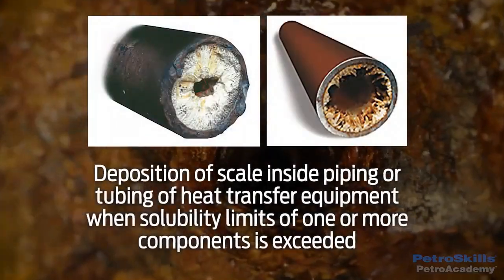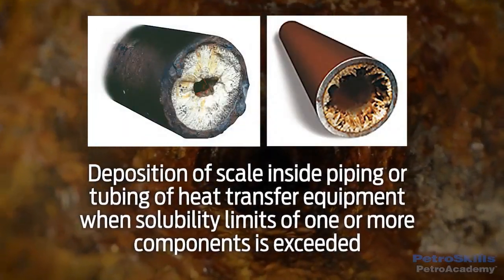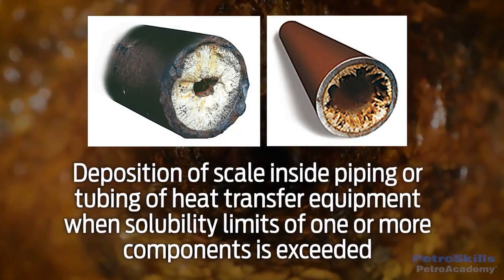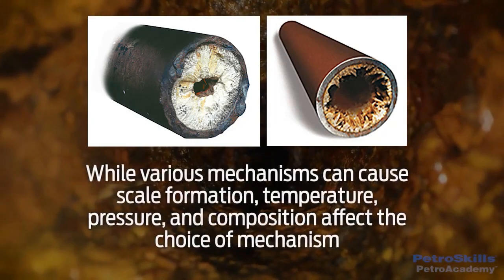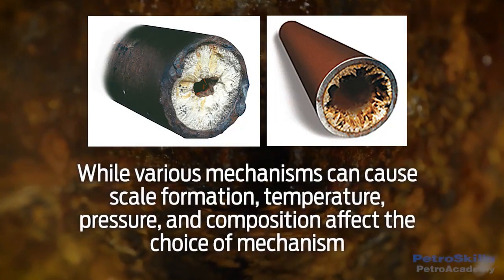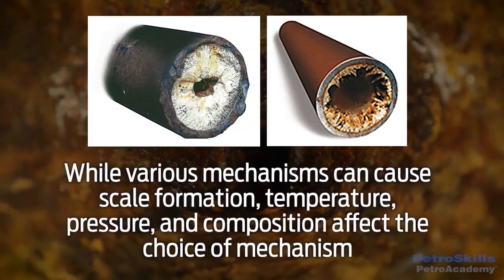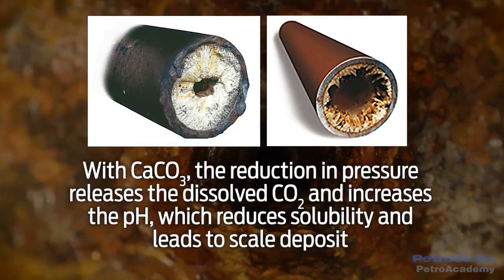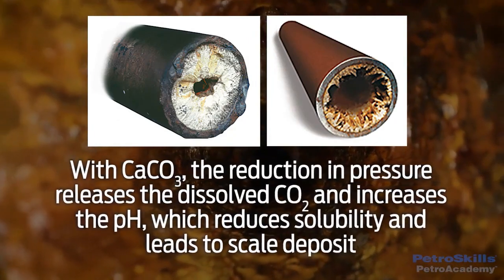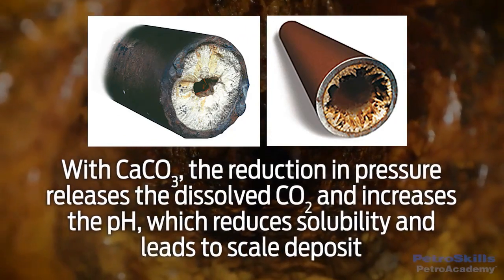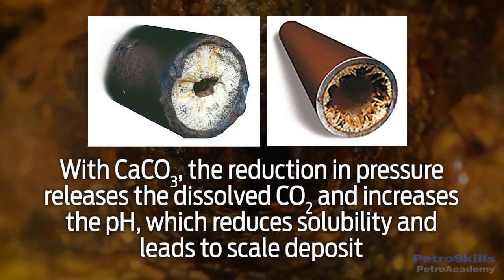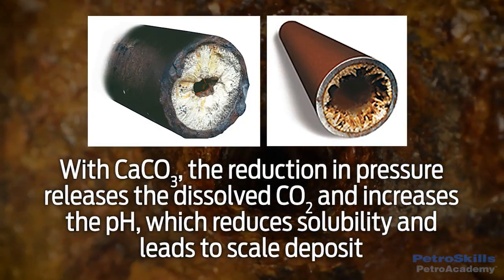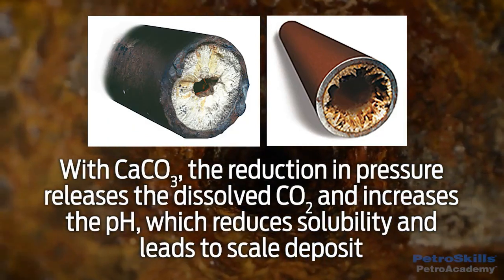These photos show deposition of scale inside piping or tubing of heat transfer equipment when solubility limits of one or more components are exceeded. While various mechanisms can cause scale formation, temperature, pressure, and composition affect the choice of mechanism. As an example, for calcium carbonate (CaCO3), the reduction in pressure releases dissolved carbon dioxide from produced water and increases the produced water's pH, which reduces the solubility of CaCO3 and leads to scale deposit.